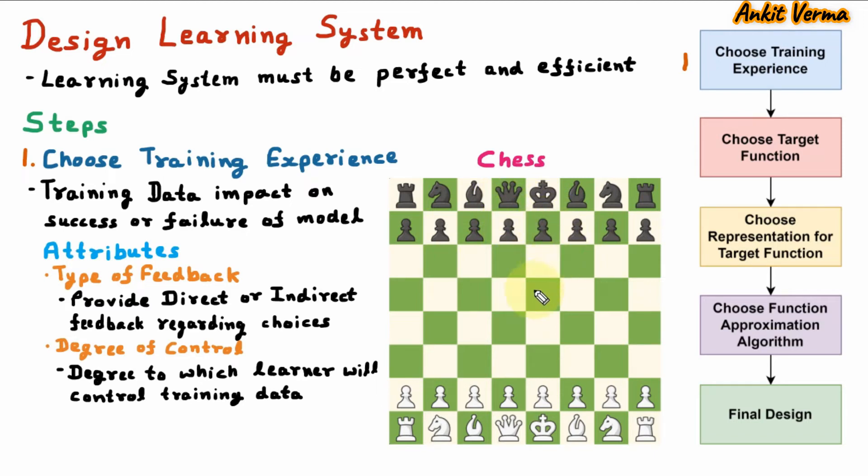This model is playing again and again and learning out of it. After so much learning, this model is now controlling the data and also it is controlling the complete chess game. So we should decide at which degree learner can control the data, whether it is partial or fully controlling the data.